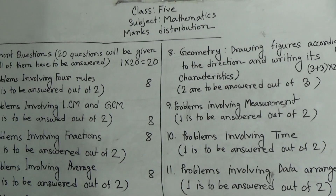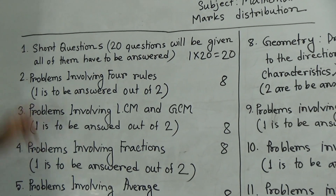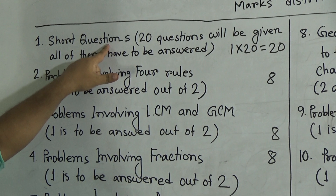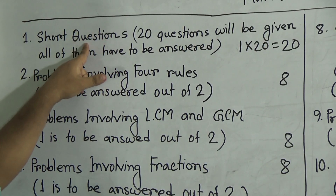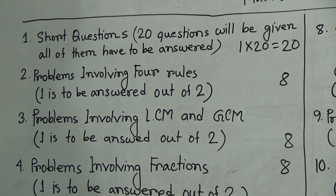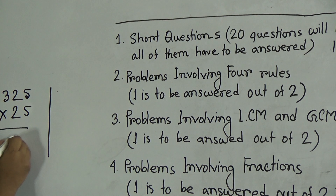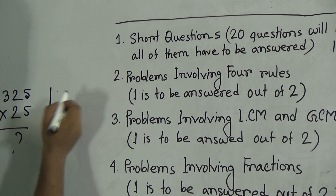Let us discuss your question pattern. Question number 1 is short questions. 20 short questions will be given and you have to answer all of them. In short questions, you can write the answer only, or if you want to show the solution procedure, you may do so. For example, 325 multiplied by 25 — in this section you show the solution and write the answer.